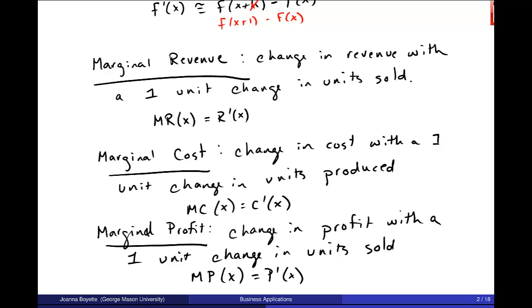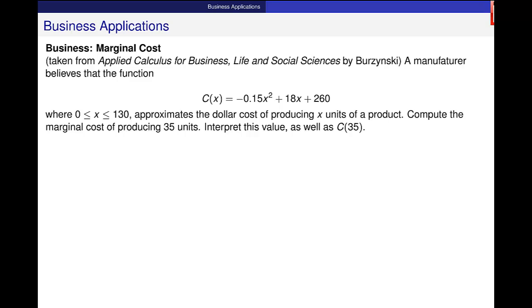We've done some of these problems before. Let me find this application problem. Here's from your textbook. A manufacturer believes that the function C of x, where x is between 0 and 130, approximates the dollar cost of producing x units of a product. Compute the marginal cost of producing 35 units and interpret that value as well as C of 35.